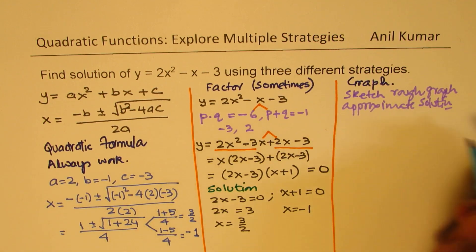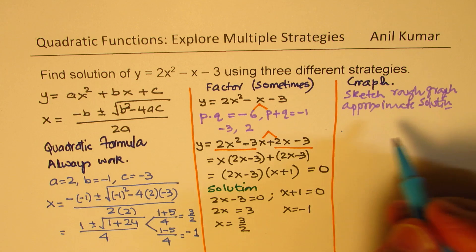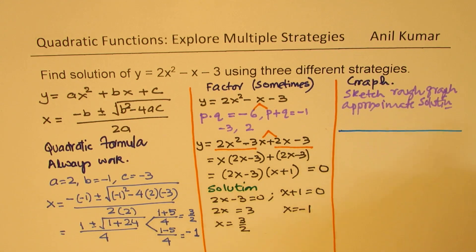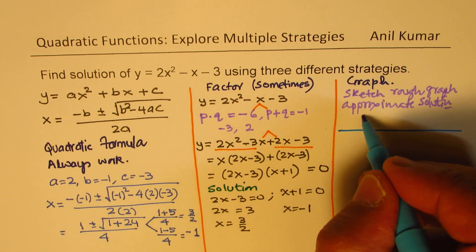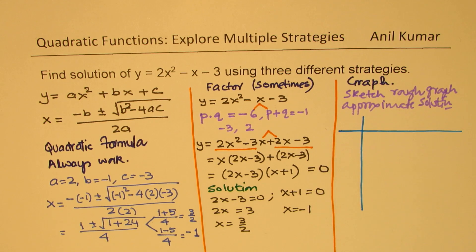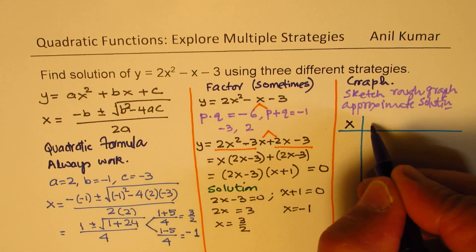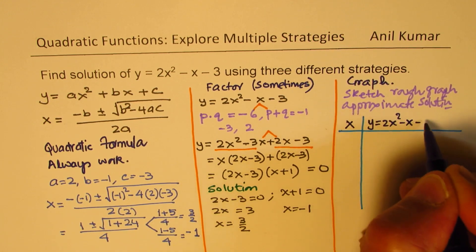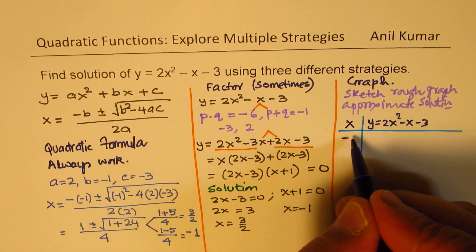So let's try to graph. How will we graph it? Well, what we will do here is we'll calculate the value of this function for different values of x. Okay. So let me just sketch some. We'll take some values of x and calculate y equals 2x squared minus x minus 3. So let me take x as minus 2, minus 1, 0, 1, and 2.